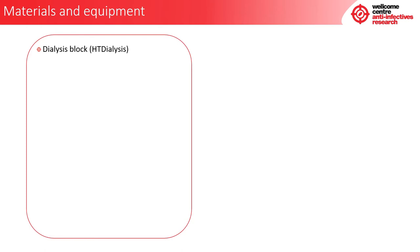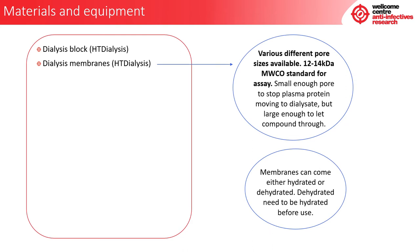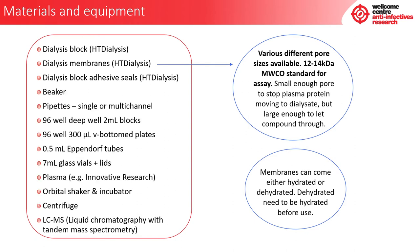Materials and equipment. For this experiment you will need a dialysis block and dialysis membranes. These membranes are available in various different pore sizes. A 12 to 14 kilodalton molecular weight cutoff is standard for this assay. These membranes have a small enough pore size to stop the plasma protein moving to the dialysate, but also have a large enough pore size to let the compound through. Membranes can come either hydrated or dehydrated; dehydrated membranes need to be hydrated before use.